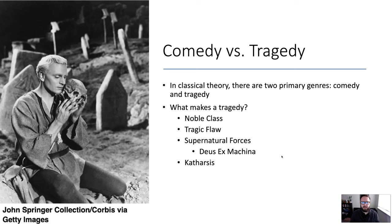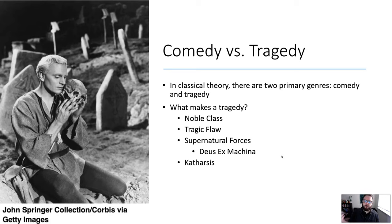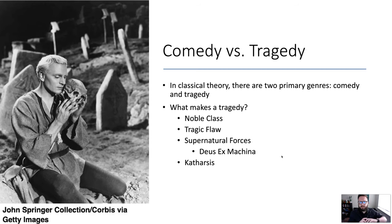Another aspect of classical tragedy is the involvement of supernatural forces — fate, the gods, some extra-human force. One way this manifests, especially in ancient Greek theater, is through deus ex machina, which literally means 'the god machine.' They would literally lower a god down onto the stage on a machine right at the end of the play when things were completely chaotic, and the god would magically tie everything back together and solve all the problems.